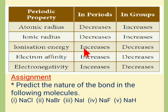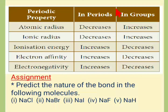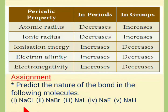In summary: for periodic properties, atomic radius and ionic radius decrease along the period and increase along the group. Ionization energy, electron affinity, and electronegativity increase along the period and decrease along the group. These are the five important periodic properties. Thank you, students. Do the assignment: predict the nature of the bond in the following molecules — sodium chloride, sodium bromide, sodium iodide, sodium fluoride, and sodium hydride.